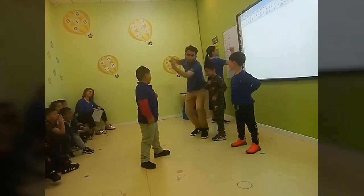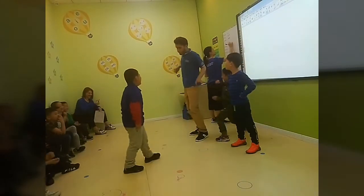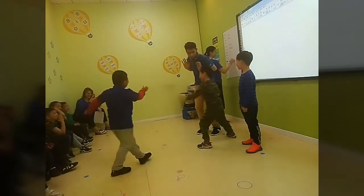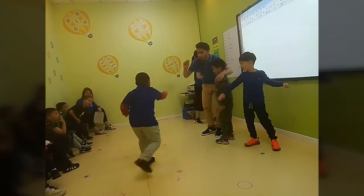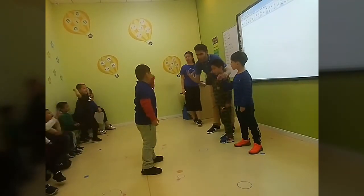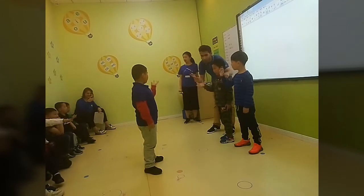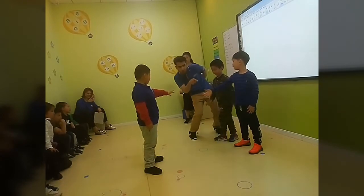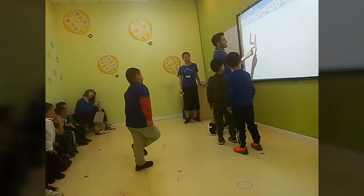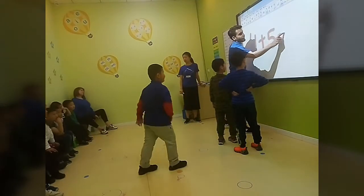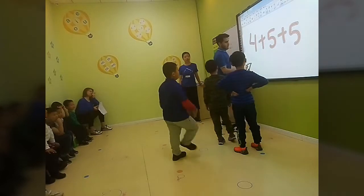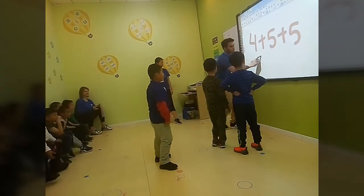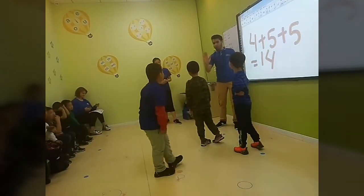Game number 1: Rock Scissors Paper. We all chant together: Rock Scissors Paper, Rock Scissors Paper, 1, 2, 3, play with me. Students hold up fingers, I write it down on the board and they say it. Rock Scissors Paper, 1, 2, 3 — okay, 4 plus 5 plus 5 equals 14. Very good, 14, you got it right! Give me 5.